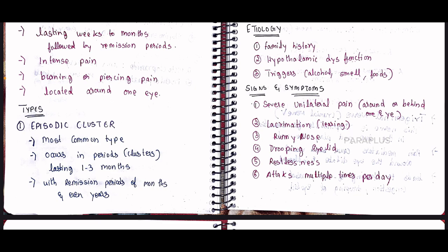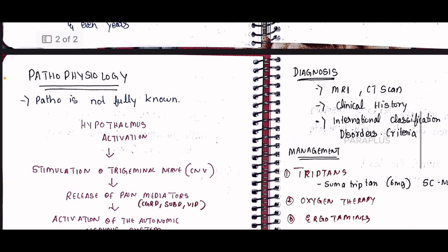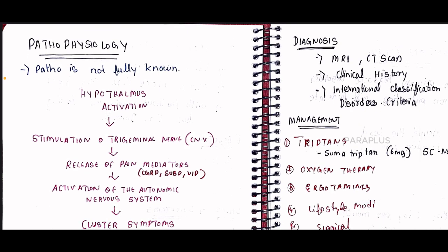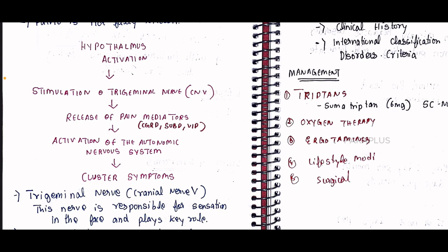Moving onto the pathophysiology — it cannot be fully identified, but based on assumptions and studies, it involves hypothalamus activation, meaning hypothalamic dysfunction is activated. This activation stimulates the trigeminal nerve, which is cranial nerve 5. When this nerve is stimulated, it releases pain mediators such as substance P, VIP, and CGRP — all of which are inflammatory pain mediators.